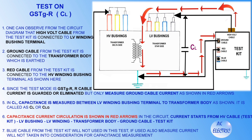In this slide we will see the test on GST-GR mode for CL type. The high-voltage cable from the test kit is connected to the LV winding bushing terminal, and the ground cable is connected to the earthed transformer body. The red cable is connected to the HV winding bushing terminal. Since the test mode is GST-GR, red cable current is guarded or eliminated — only ground cable current is measured. In CL type, capacitance is measured between the LV winding bushing terminal and the transformer body, called CL or CLG. Current starts from the HV cable in the test kit, then to LV bushing, LV winding, transformer body, ground cable, and ends in the test kit. The blue cable from the test kit is not used; if used, its current will not be taken into consideration for capacitance measurement.